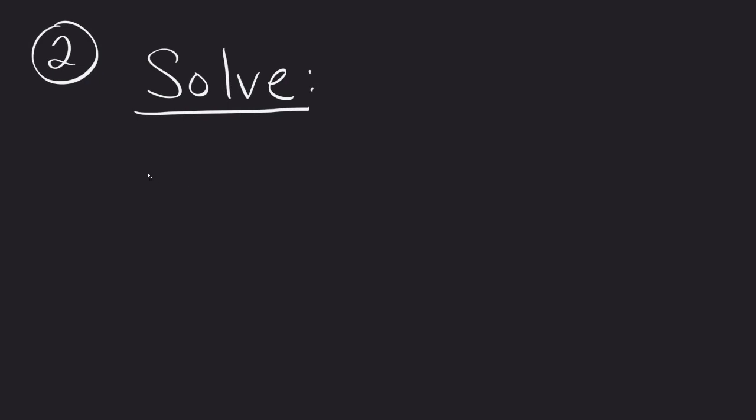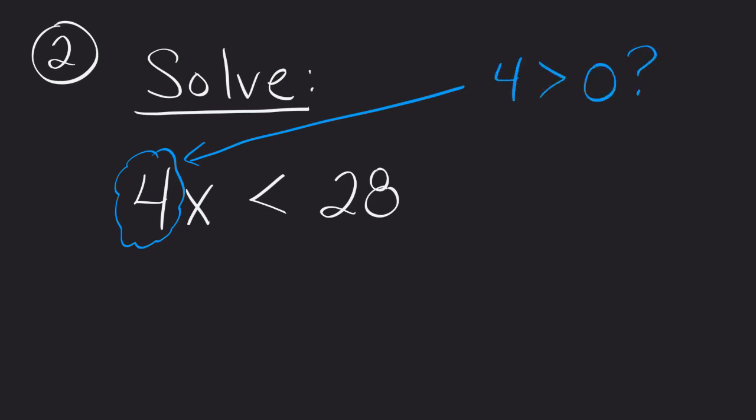We'll give you a problem like 4x is less than 28, and we'll go ahead and look at that c value again. So is 4 greater than zero?